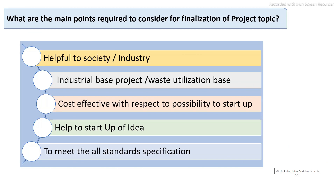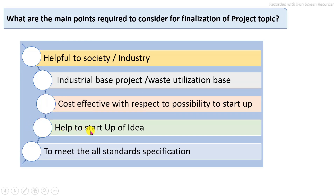What should be considered with respect to the finalization of the project topic? Before finalizing, we should consider whether it is helpful to society or a specific industry sector. Industrial-based projects are very good with respect to direct application. The project should be cost-effective and have the possibility to start up a specific small-scale industry, which is helpful for new startup ideas. In addition to product development, we should meet all standards with respect to the specific product.